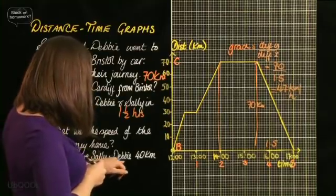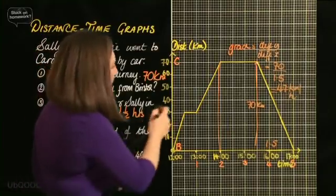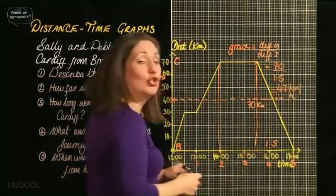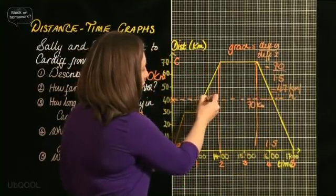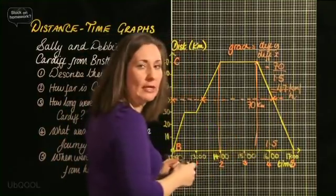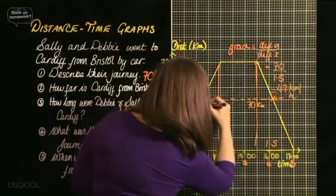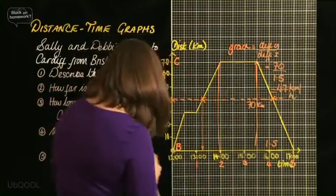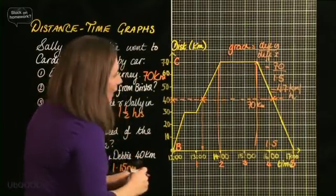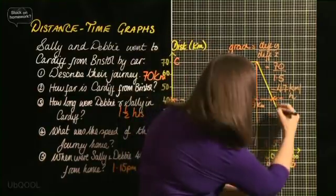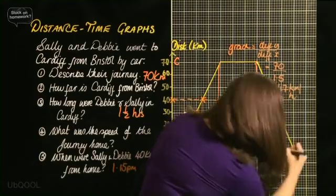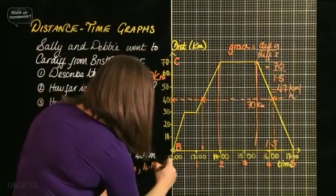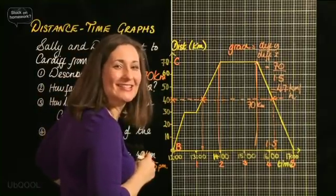Right, let's have a look at the last question. When were Sally and Debbie 40 kilometers from home? Well, here's my 40 kilometer mark. And if I just draw a dotty line to represent 40 kilometers, 40 kilometers, I can see on two occasions they were 40 kilometers from home. On the way out, and on the return journey. So I've got to give two answers. Now the first answer, you just drop a perpendicular line down with your ruler, and that works out to be about 1.15. So I can say 1.15 PM. And the second one, again, drop the perpendicular down. Just drop it down like that with your ruler. And I can see again, that's about 4.15. So the other one again is 4.15 in the afternoon. And there you go. A rather nice distance time graph question.